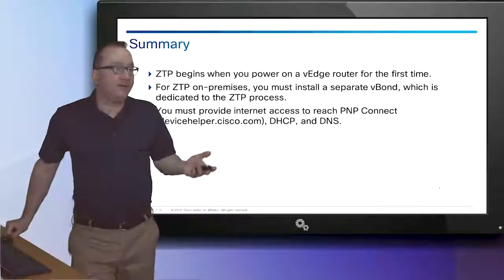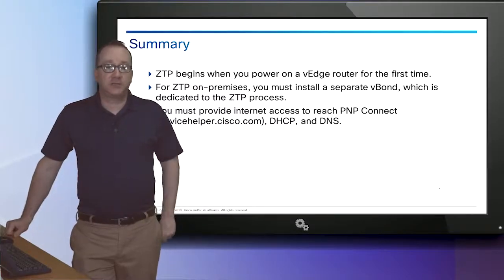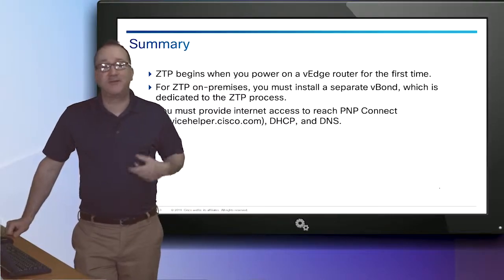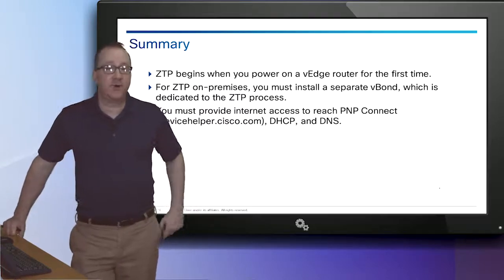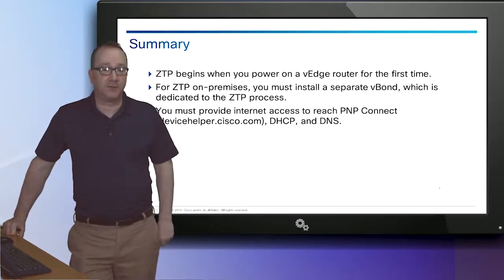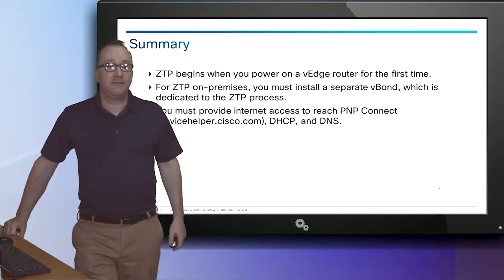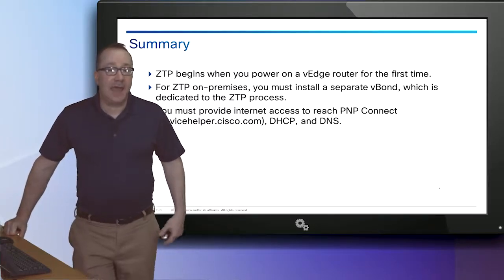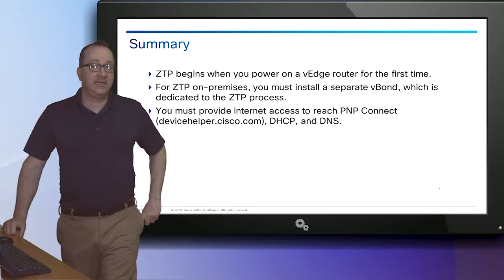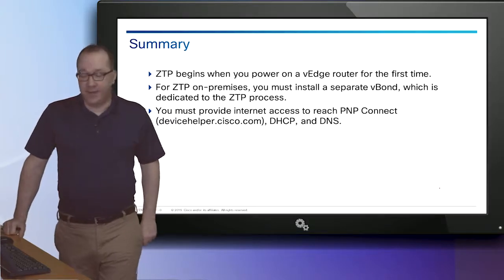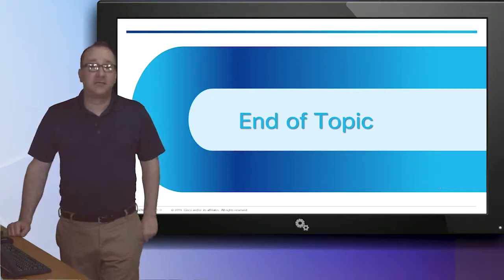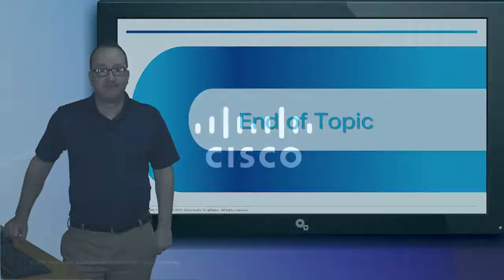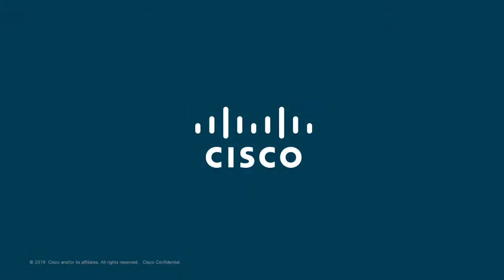Basically, we turn on the router and Zero Touch Provisioning will start. For on-prem, we're going to have to install a separate vBond — two vBonds total: one for ZTP and one for regular vBond services. We also need DHCP services and may have to have specific DNS entries to support our local vBond. Thank you very much — that concludes Zero Touch Provisioning for now.